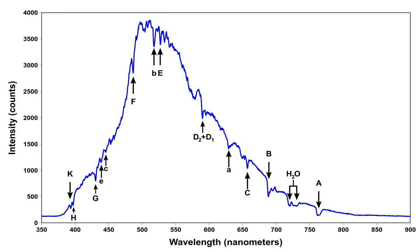An absorption line is produced when photons from a hot, broad-spectrum source pass through a cold material. The intensity of light over a narrow frequency range is reduced due to absorption by the material and re-emission in random directions. By contrast, a bright emission line is produced when photons from a hot material are detected in the presence of a broad spectrum from a cold source. The intensity of light over a narrow frequency range is increased due to emission by the material.